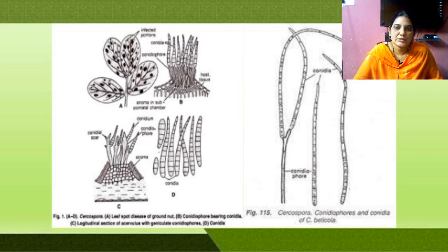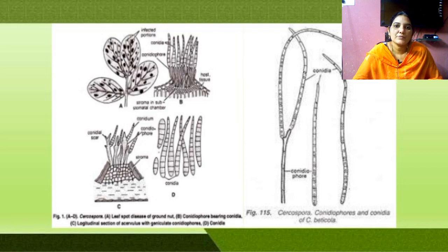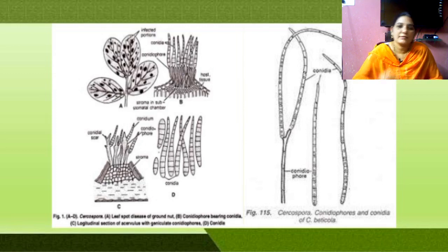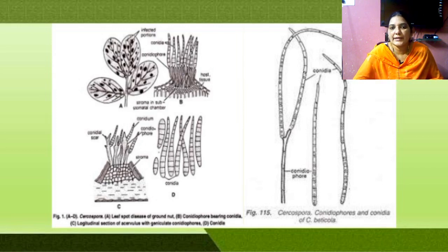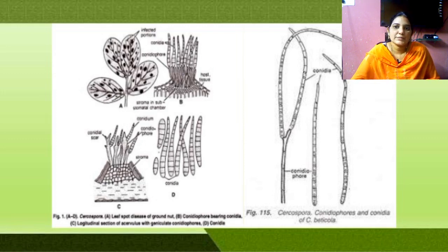When mycelium formation is complete, it undergoes asexual reproduction and forms conidiospores. The conidiospore is coenocytic, having many nuclei. It forms a round-shaped structure at the upper side, called a conidium. Each conidium is attached with the others, forming a sharp knife-like structure. The youngest conidium is attached to the conidiophore and the oldest conidium is at the upper side.